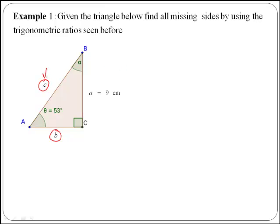We will start with c. Keep an eye on this, c is actually the hypotenuse, it is the side that is in front of the right angle.